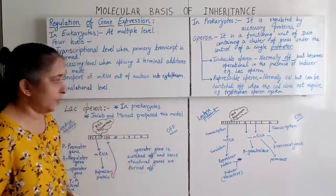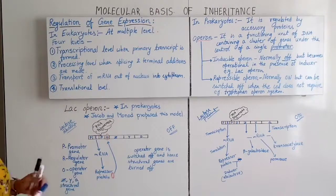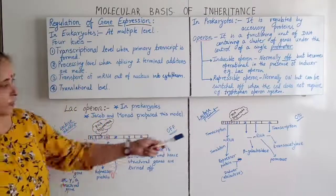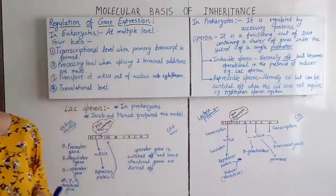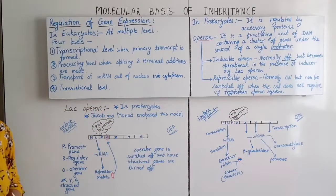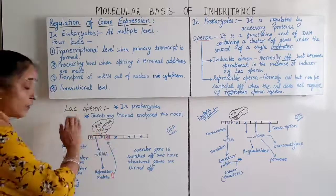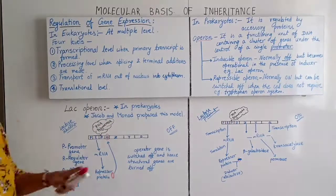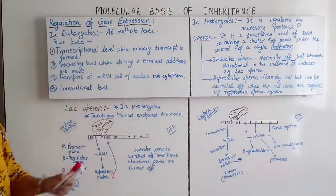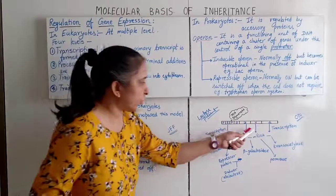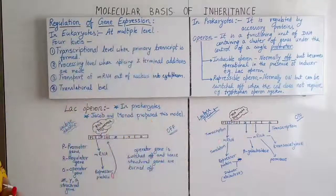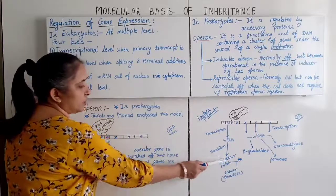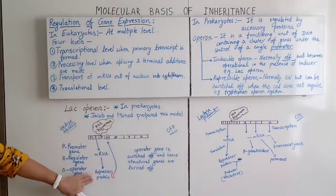Now the ON condition — when lactose is present. Again, RNA polymerase is attached to the promoter gene. The regulator gene undergoes transcription to produce messenger RNA, then translation to produce the repressor protein — same as before. The repressor protein is produced.